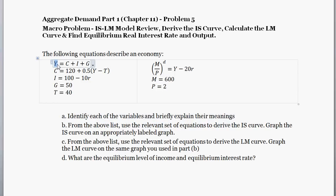Starting off with Y: Y represents real output or real income, which is the value of all goods and services produced in the economy, and it must equal the value of income earned in producing those goods and services. The variable C stands for consumption. Consumption depends positively on disposable income — income minus taxes — scaled by the marginal propensity to consume. There's also a default level of consumption: even if disposable income is zero, a person still consumes some baseline amount.